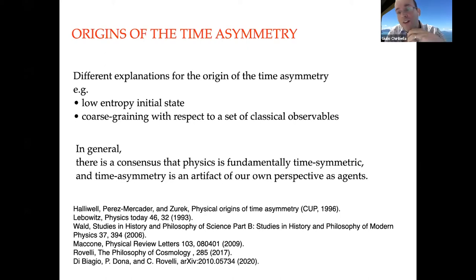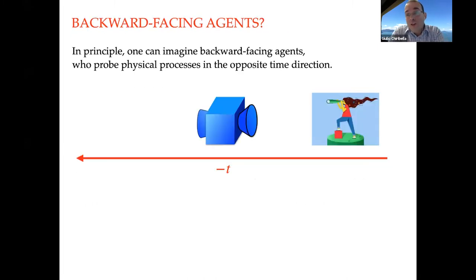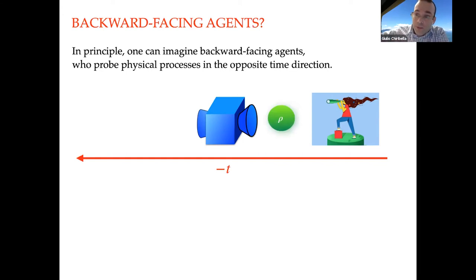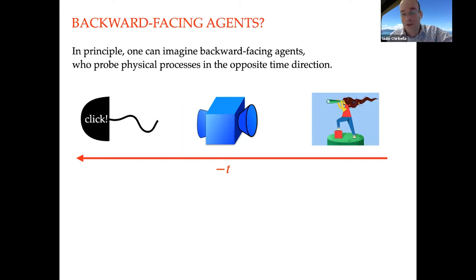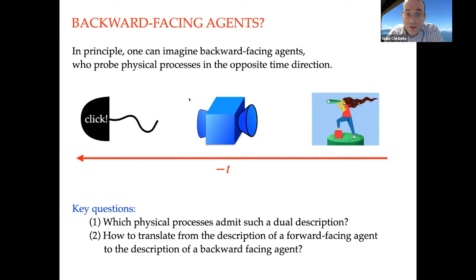It is generally acknowledged that physics itself is fundamentally time symmetric and that time asymmetry is some sort of artifact of our own perspective. One question is: can we imagine some other agents made in a different way? For example, can we imagine a backward-facing agent with opposite abilities — able to prepare a quantum state rho in the future, send it backwards through a device, and observe what state comes out by making a measurement in the past?